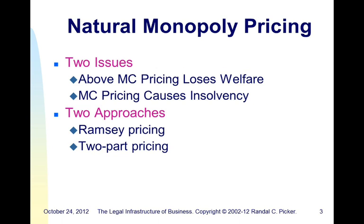We also talked about natural monopoly pricing issues, where we've got a conundrum. On the one hand, to the extent that we're recovering fixed costs through sales of the good, we have prices above marginal cost. That means we're missing sales we could be making — someone who values the good less than the average cost but more than the marginal cost won't buy, and that's a welfare loss. At the same time, if we price at marginal cost, we don't cover the fixed cost and firms become insolvent. Figuring out how to navigate that is part of what we do with pricing in these industries.